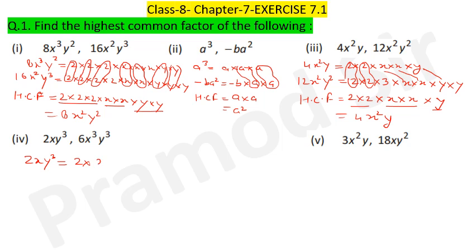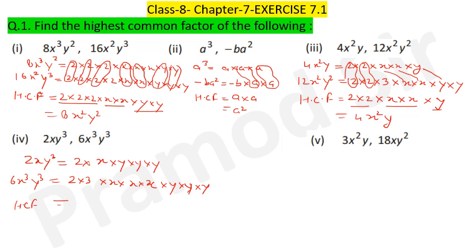Question 4: 2xy³ = 2×x×y×y×y (3 times) and 6x³y³ = 2×3×x×x×x and y three times. The common highest common factor: 2, x one time, and y three times. So HCF = 2x×y³ = 2xy³.